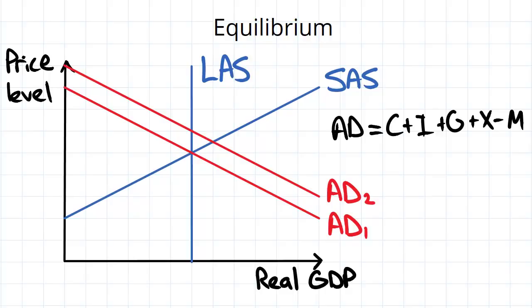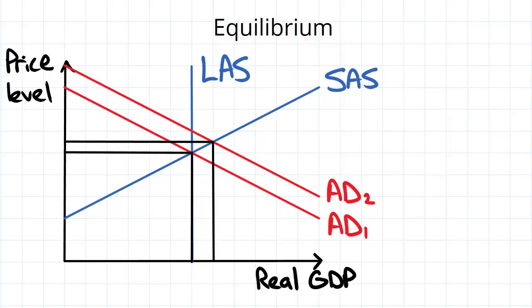And in the same way you could get an increase in government spending or you could get an increase in investment for whatever reasons. So aggregate demand can increase, which is shown by a shift up or to the right in the aggregate demand curve. When this change occurs in the short run...